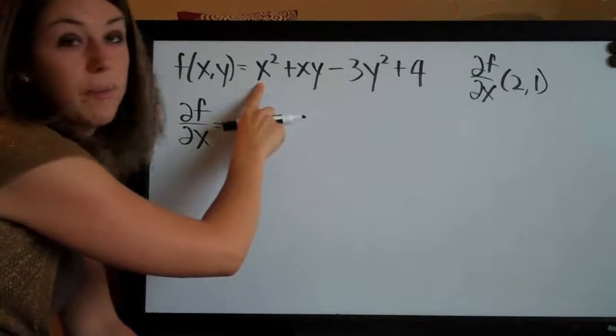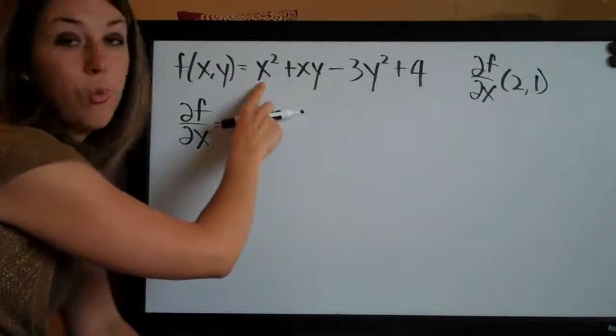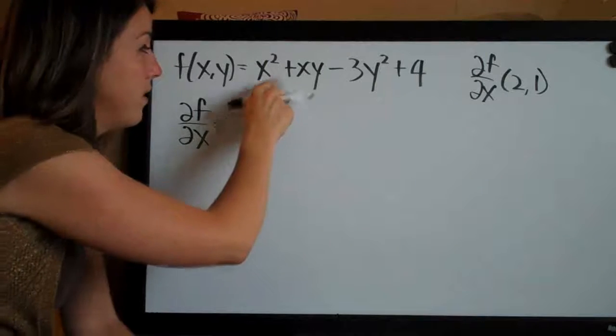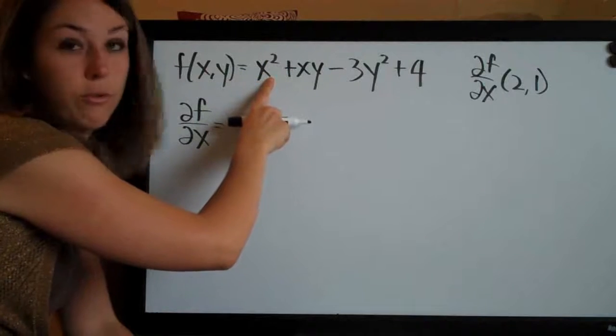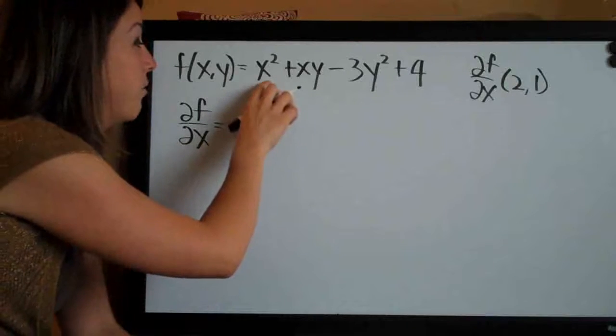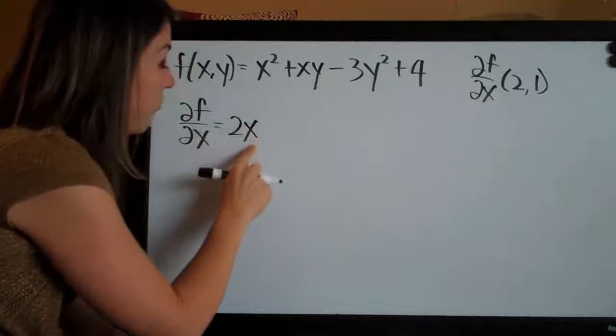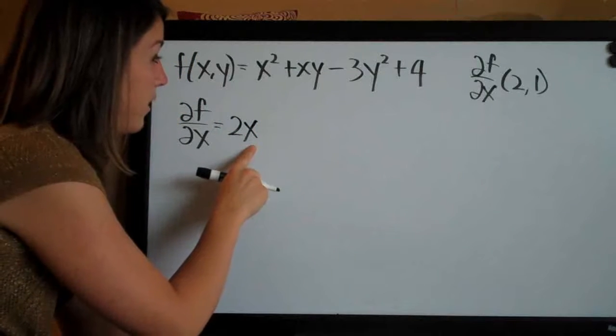So taking the partial derivative with respect to x, we go term by term. Since there's no y's involved in this term, this is easy to take the derivative with respect to x because it's just like taking a normal derivative with just a single variable. So the derivative of x squared is just 2x, right? We know from taking single variable derivatives.